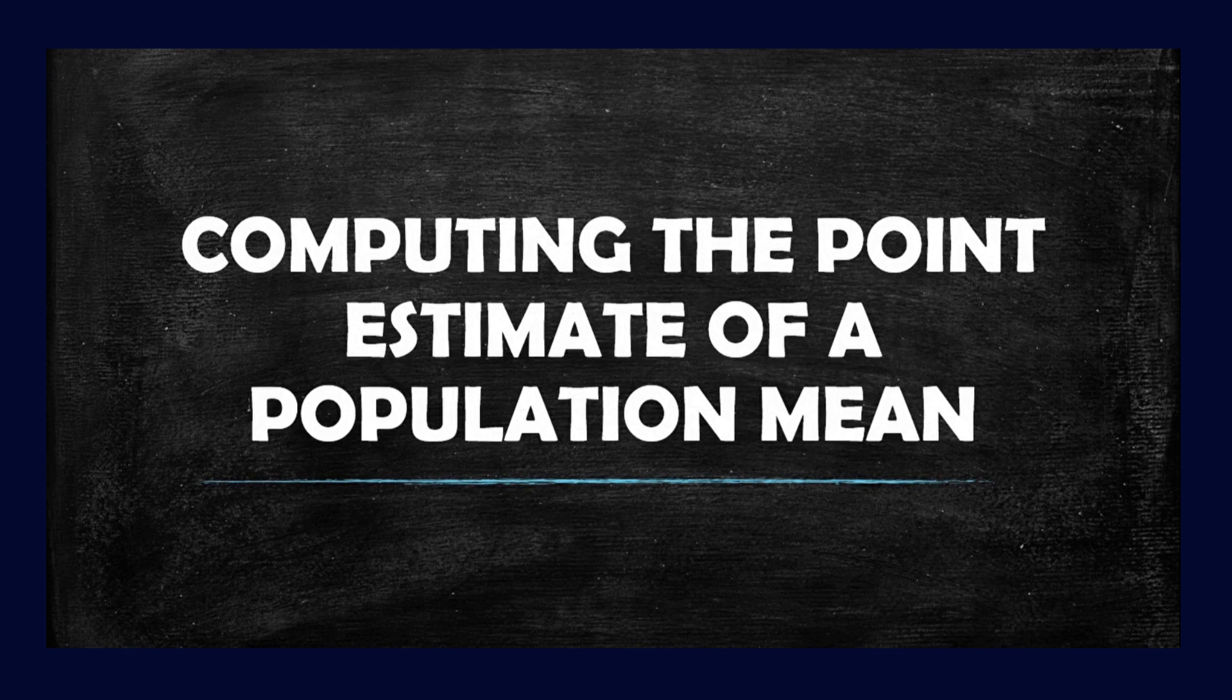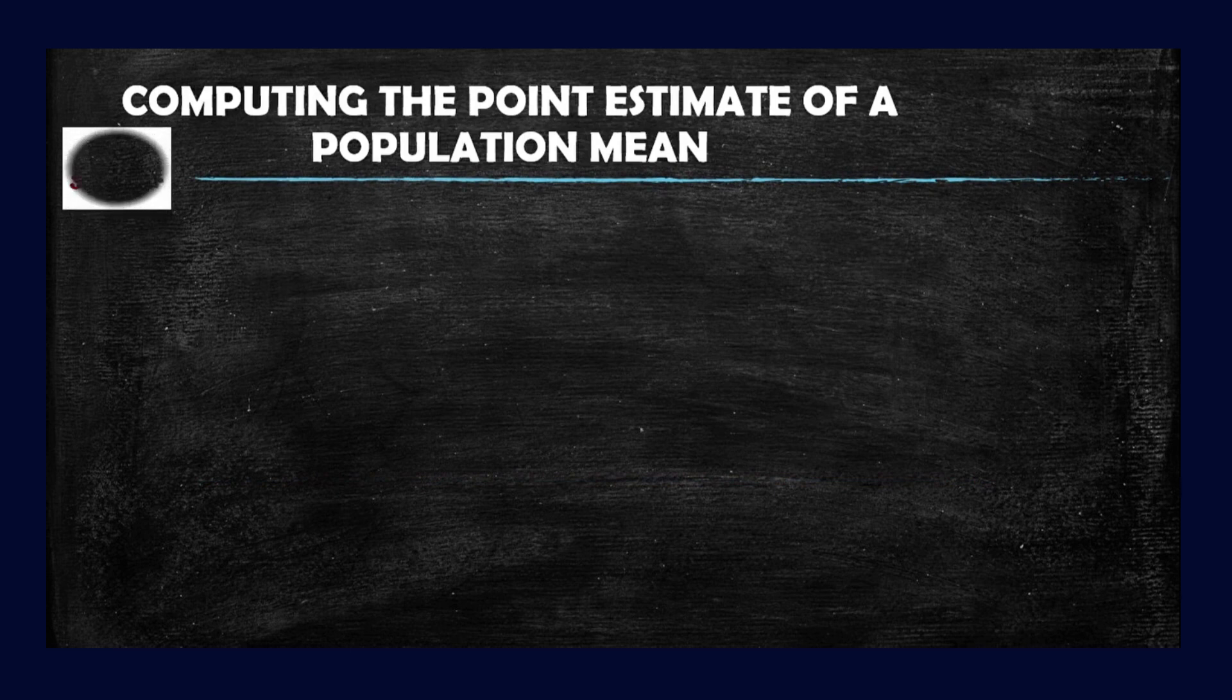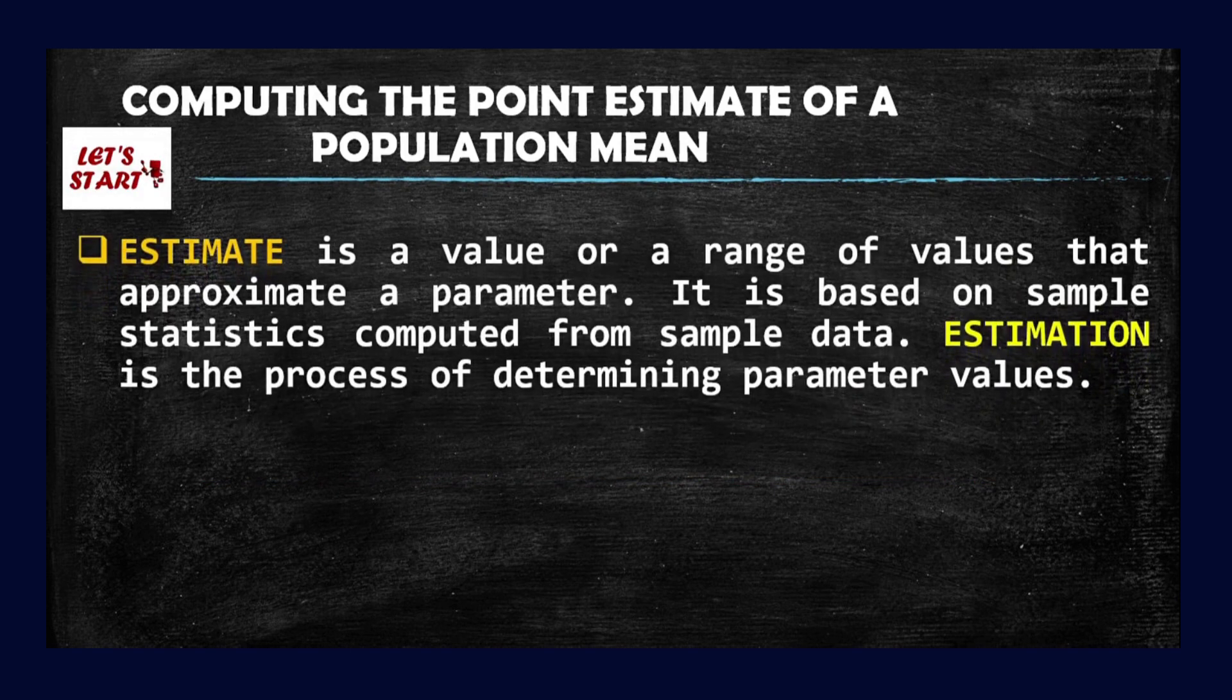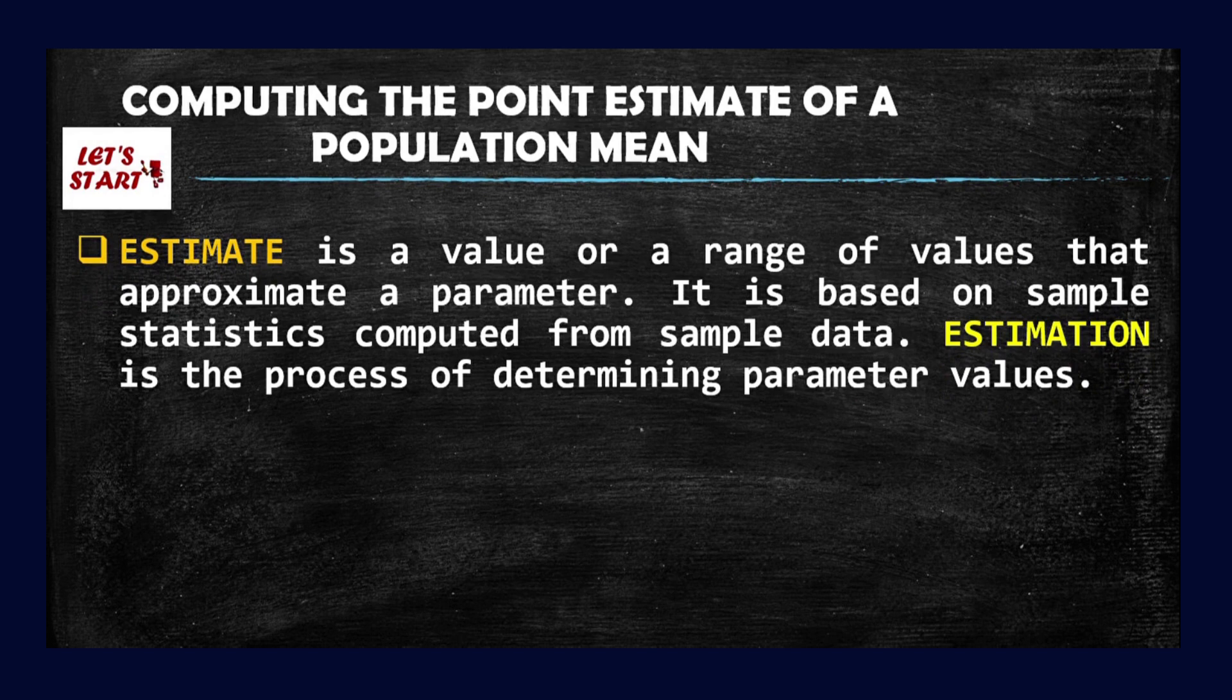This topic is actually part of our lesson about estimating parameters. So before that, let us first define some important terms regarding this topic. When you say estimate, it is a value or a range of values that approximate a parameter. It is based on sample statistics computed from sample data. Estimation is the process of determining parameter values.